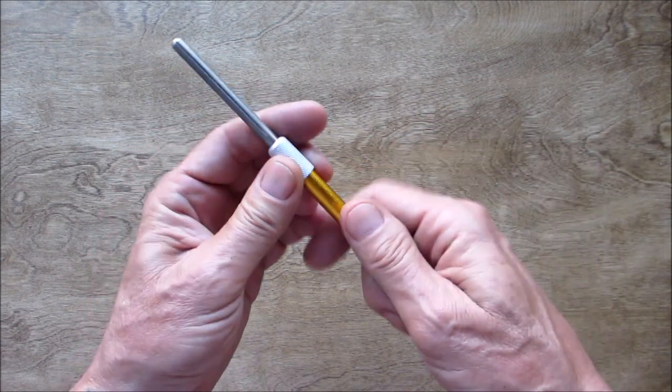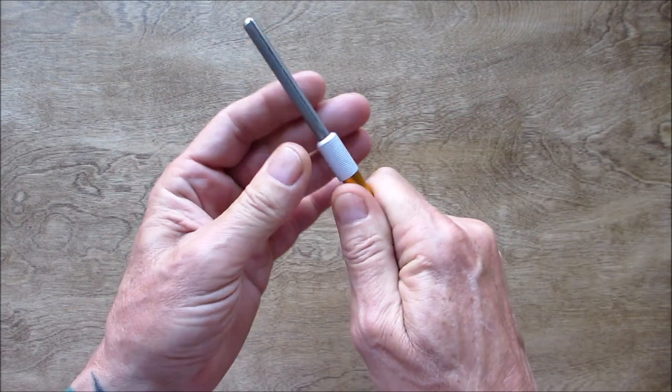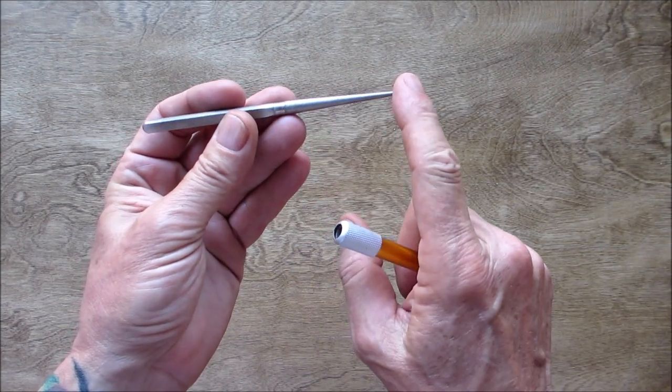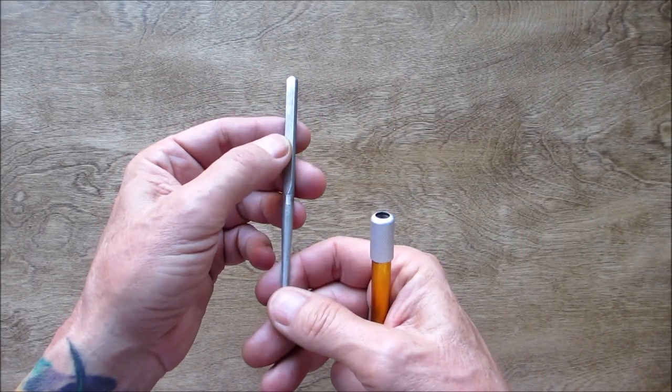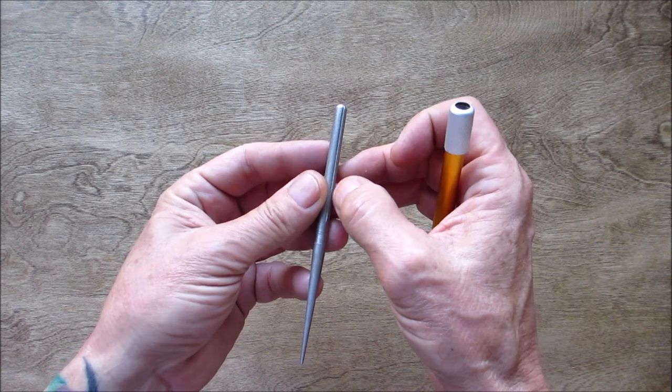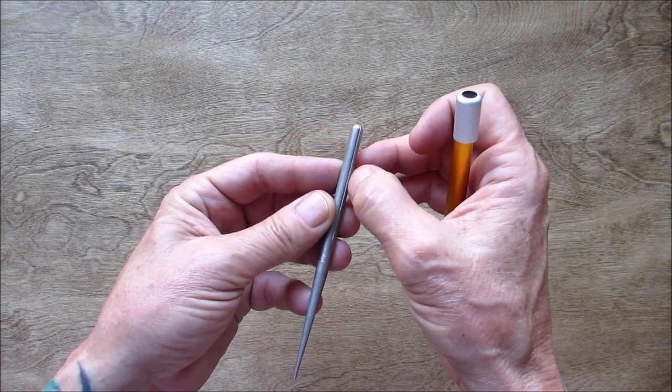It's got a little knurled nut here, and you've got two sides: a tapered side, a flat side here, and you have a groove here for fish hooks.